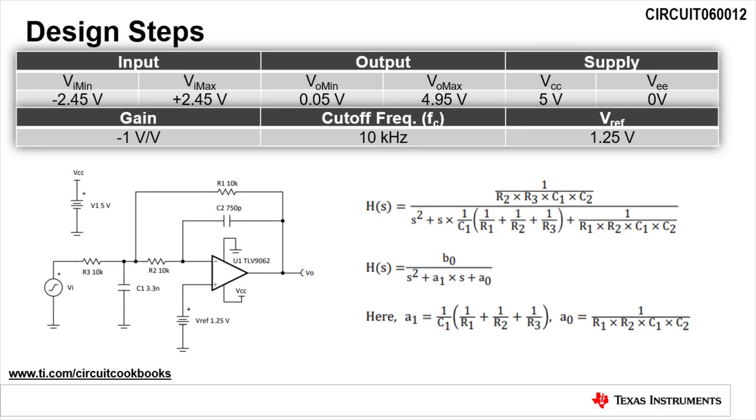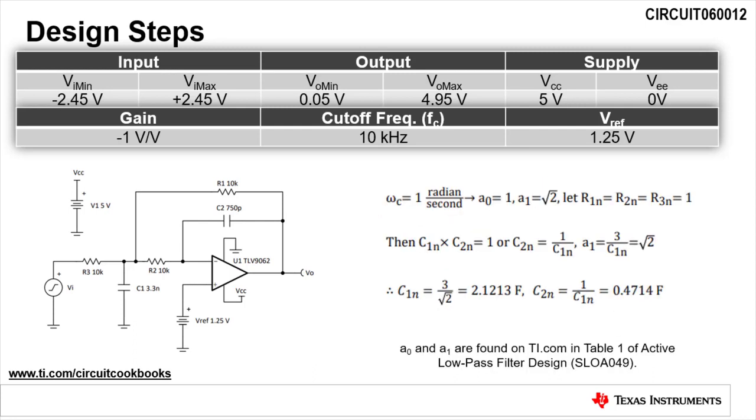While these equations look complicated, the methodology presented here greatly simplifies the design process. In the first line, we set the normalized cutoff frequency, omega-C, to 1 radian per second.